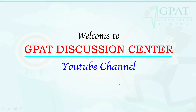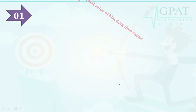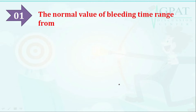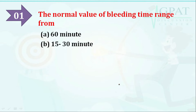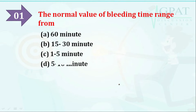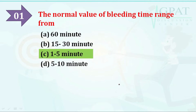The first question: the normal value of bleeding time ranges from — option A: 60 minutes, option B: 15 to 30 minutes, option C: 1 to 5 minutes, option D: 5 to 10 minutes. The correct answer is 1 to 5 minutes.